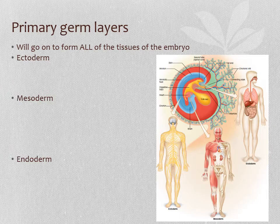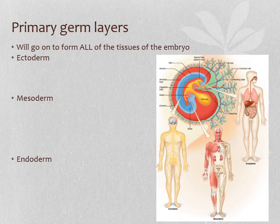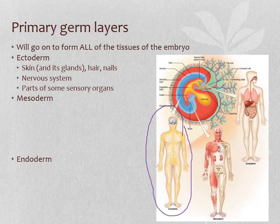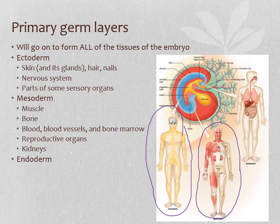The ectoderm cells are going to go on to form the skin and its glands, like sweat glands, our hair and our nails — also our nervous system. So the ectoderm is going to form the nervous system: the brain, spinal cord, and all of our nerves. The mesoderm is going to form our muscles and our bones and parts of several of our organs. It's also going to form the blood and the blood vessels. And then the endoderm, the innermost layer, is going to form the inside linings of our guts, our organs, our viscera — our insides.